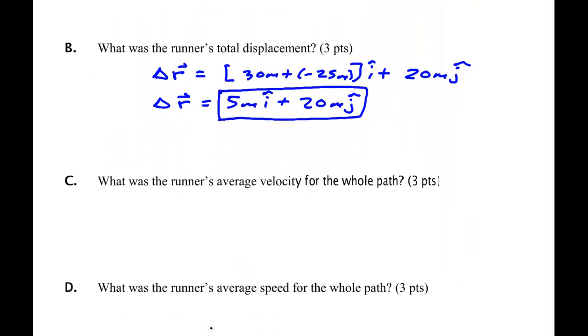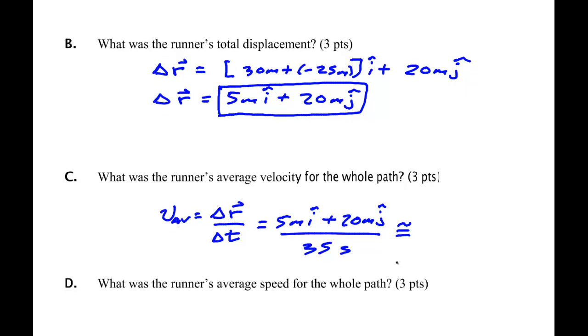What was the average velocity of the runner? V average is delta R, the displacement divided by the time. The time was done in 35 seconds. So we have 5 meters i hat plus 20 meters j hat, all of that over 35 seconds. That gives us, let's see if I punch a calculator here and get some numbers. I got 0.143 meters per second i hat plus 0.571 meters per second j hat.